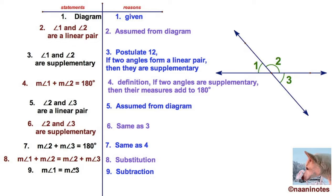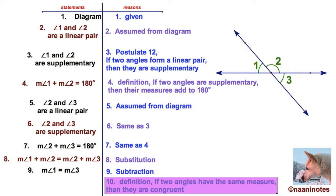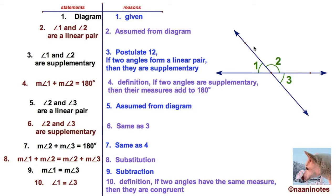And finally, I've got two angles with the same measure. If two angles have the same measure, then they are congruent. That's a definition. Therefore, angle 1 is congruent to angle 3. Those are your vertical angles.